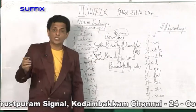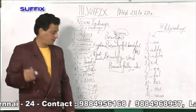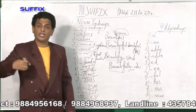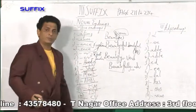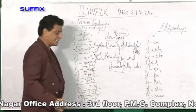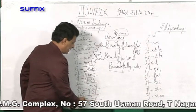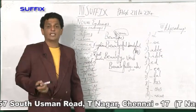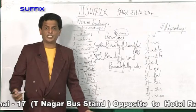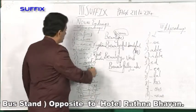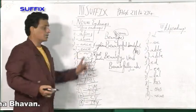Any word ending with '-hood' is also a noun — 'childhood', 'the childhood friendship.' Any word ending with '-ship' is a noun — 'friendship.' Any word ending with '-ment' is a noun — 'management.' Any word ending with '-ness' is an abstract noun — 'happiness.' '-ism': 'capitalism', 'socialism' — it is a noun. '-ist': 'tourist' — it is a noun. '-acy': 'efficiency.' '-ity': 'priority.' All words ending with these suffixes are called abstract nouns.